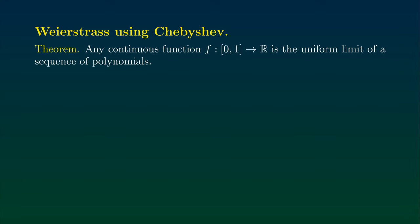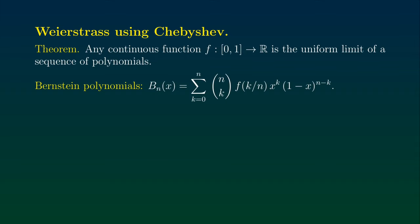This theorem states that any continuous function defined on a bounded closed interval can be written as the uniform limit of a sequence of polynomials. Without loss of generality, we can just assume that our continuous function f is defined on the closed unit interval [0,1]. The traditional proof is to show that f is going to be the uniform limit of the sequence of Bernstein polynomials defined here on this slide. I call those polynomials Bn — that defines the sequence of polynomials.